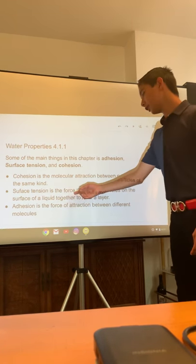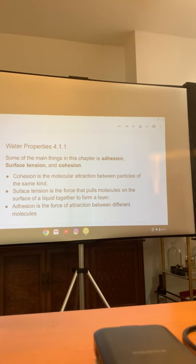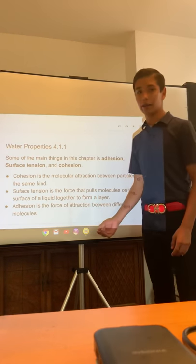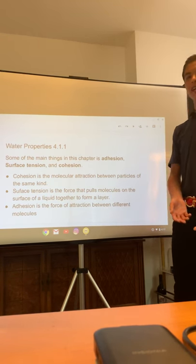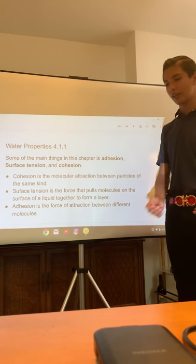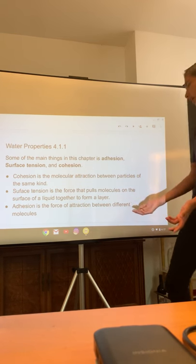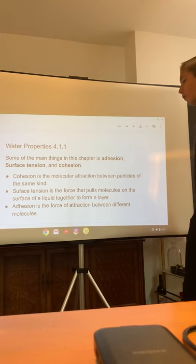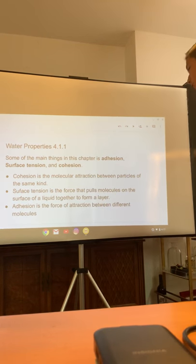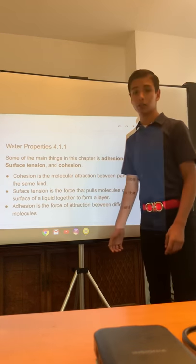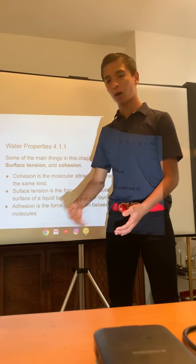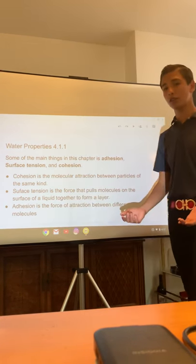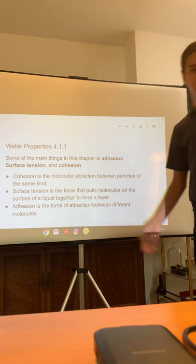Surface tension is the force that pulls molecules on the surface of a liquid together to form a thin layer. So the positive and negative charges are attracting to each other, and if you get a bunch of those together that's going to create that super thin layer. And adhesion is the force of attraction between different molecules — different molecules have different particles and those particles are attracted to each other, and that's what's happening here to create adhesion.